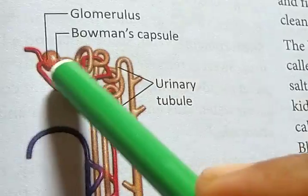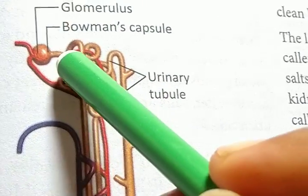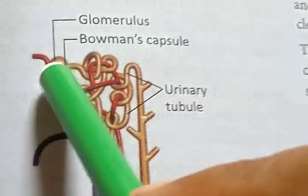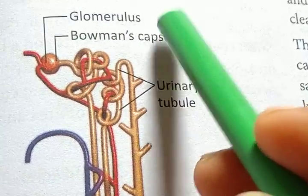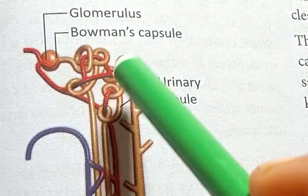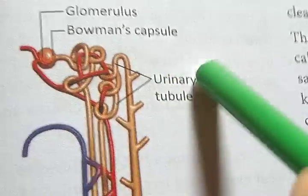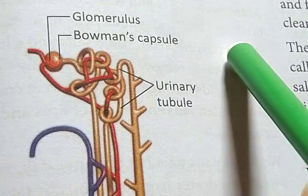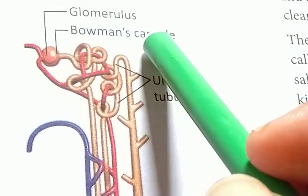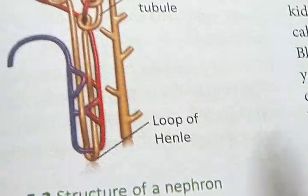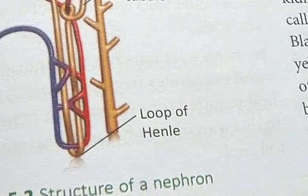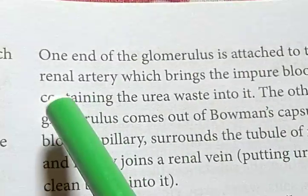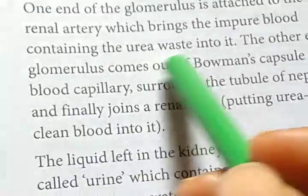Here is the cup-shaped structure at the upper end of the nephron — the Bowman's capsule — which consists of lots of blood capillaries known as the glomerulus (plural: glomeruli). The lower end of the Bowman's capsule is a tubular structure known as the urinary tubule. The tubular structure that loops down is known as the loop of Henle. One end of the glomerulus is attached to the renal artery, which brings impure blood containing urea waste into it.